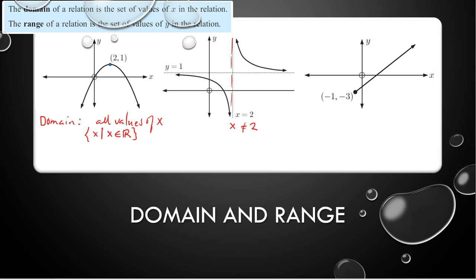The next domain here — as you can see, from negative 1 here, from negative 1 to infinity. So we have the set of all x such that x is greater than or equal to negative 1. Because this endpoint is solid — if it's not solid, then it is not included.